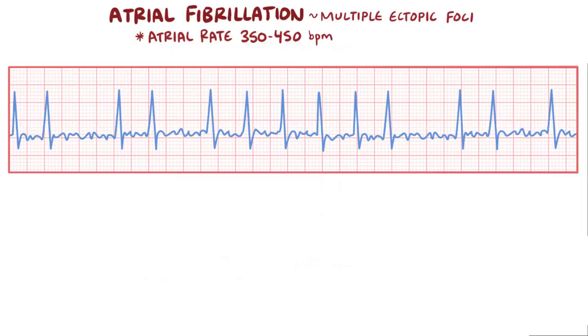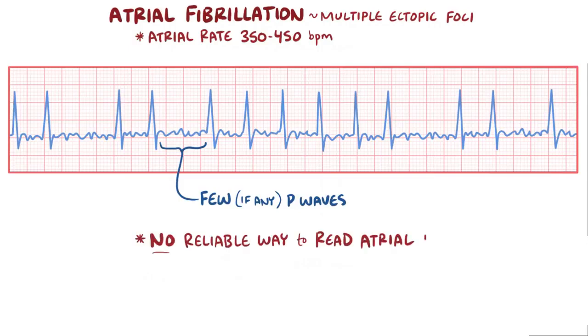In this case, the ectopic foci fire too quickly for the atria to be fully depolarized by any one of them, so there are few, if any, actual P waves. Without P waves, there's not a reliable method of determining the atrial rate just by looking at an ECG strip, and the heart rate's really just an estimate, because at this point the heart's just sort of quivering.